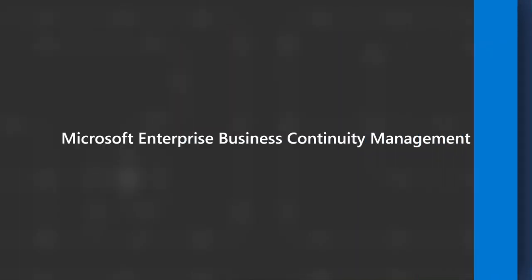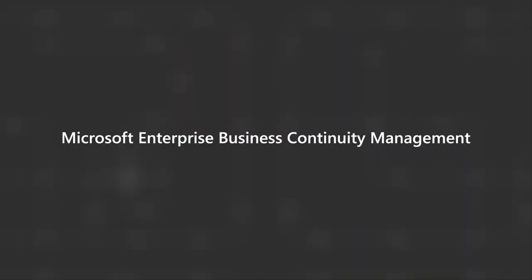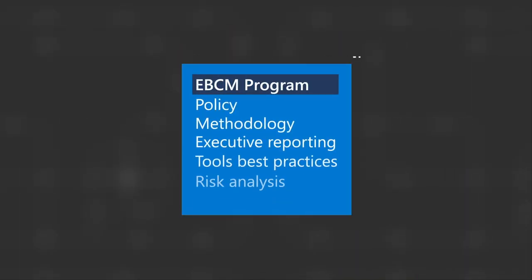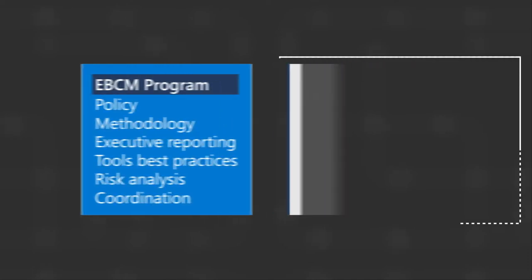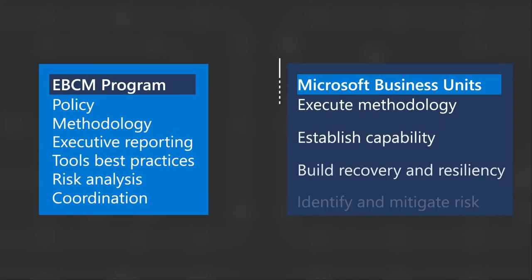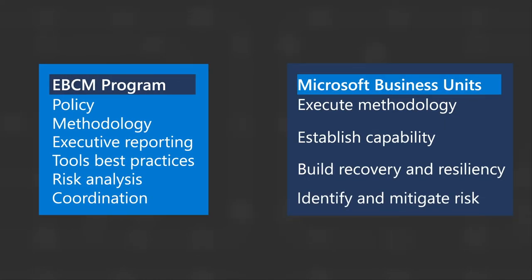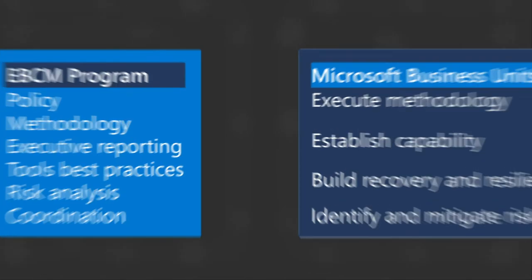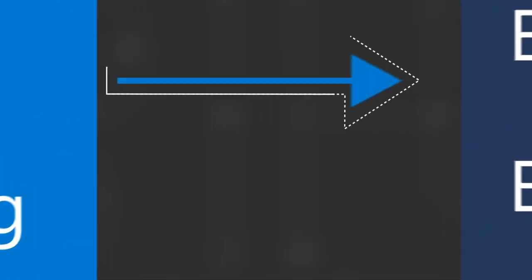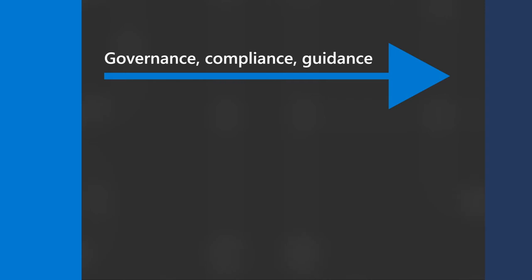The Microsoft Enterprise Business Continuity Management Program, or EBCM Body of Work, creates a holistic management process which helps to assess, plan, and strengthen Microsoft's resiliency by identifying potential threats, increasing capabilities, and responding to a disruption so business can be returned to normal operations.